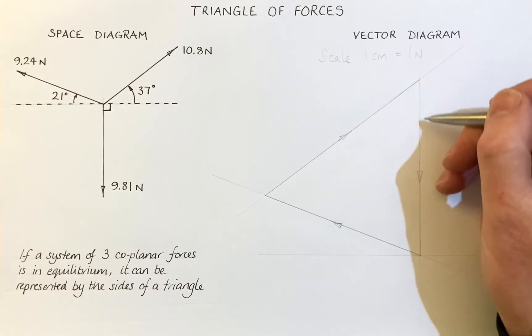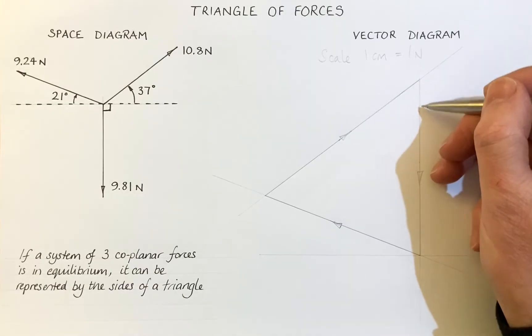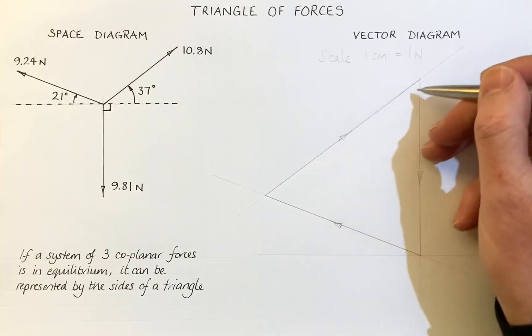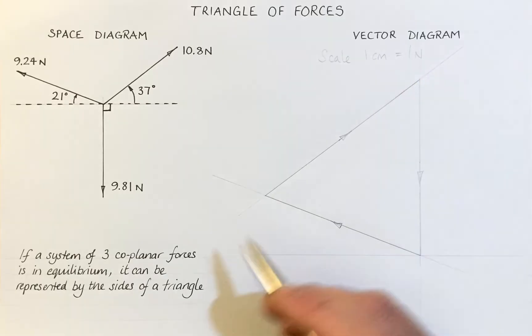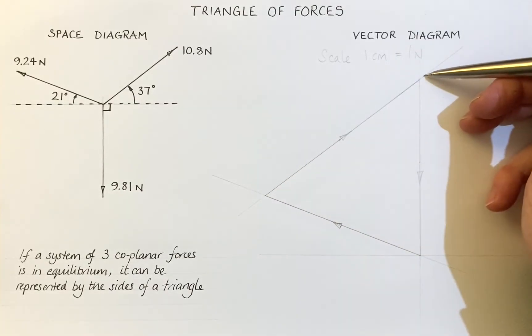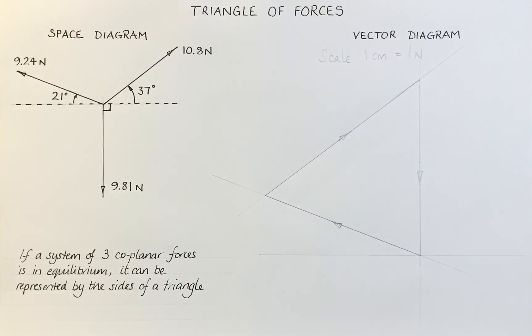And it's a triangle of forces. You can see that they go nose to tail, nose to tail, nose to tail. So if a system of three coplanar forces is in equilibrium, it can be represented by the sides of a triangle. And that is triangle of forces.